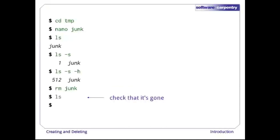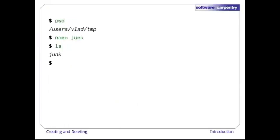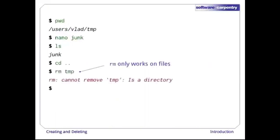If we now run ls, its output is empty once again, which tells us that our file is gone. Let's recreate that file, and then move up one directory to /users/vlad using 'cd ..'. If we try to remove the temp directory using 'rm temp', we get an error message. rm only works on files, not directories.